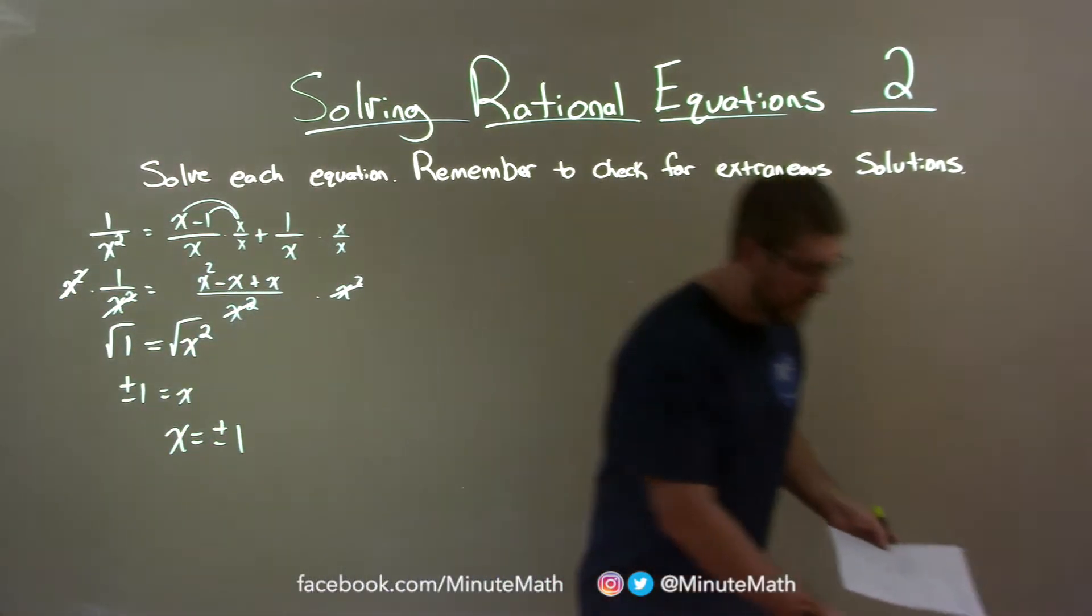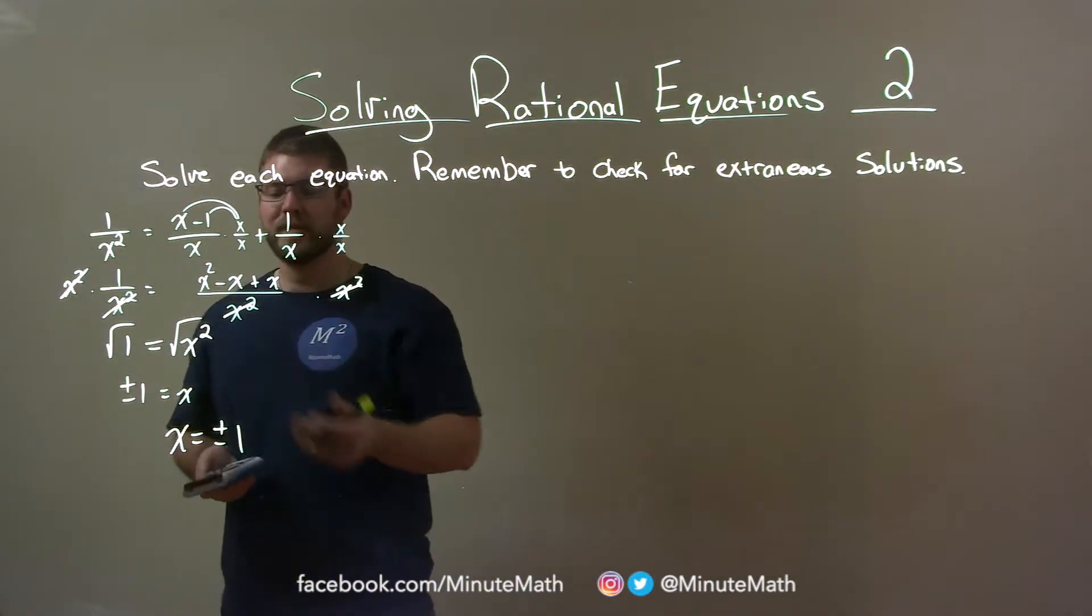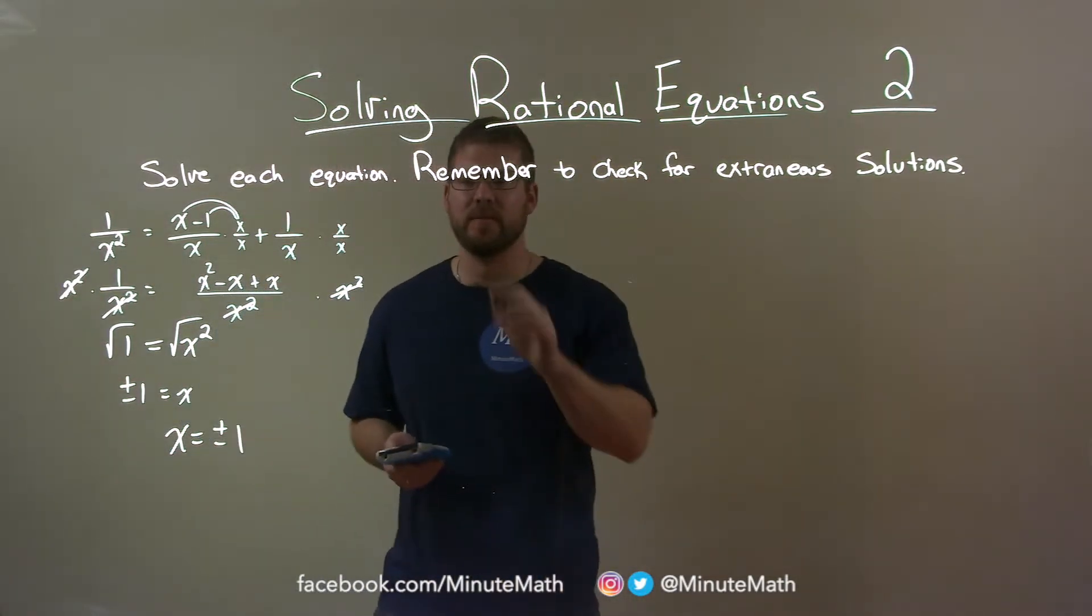So this one's actually pretty easy. We just need to check now for our extraneous solutions. We're going to take our original equation and put 1 in for x and negative 1 in for x as well.